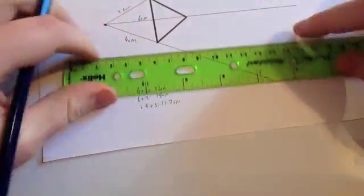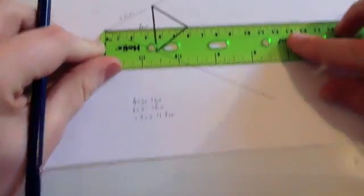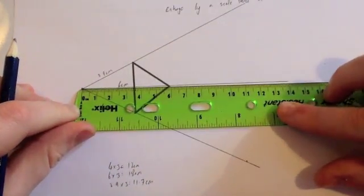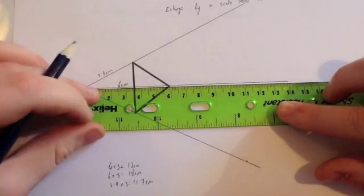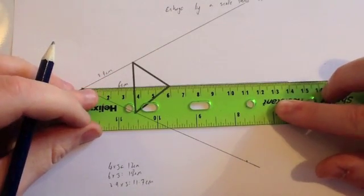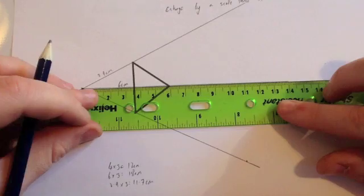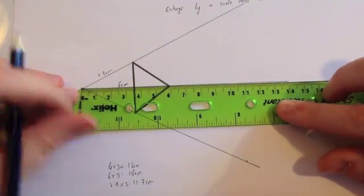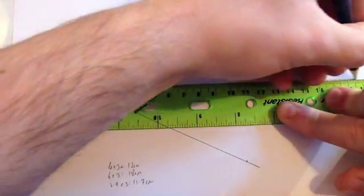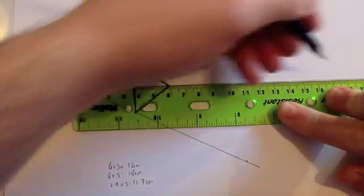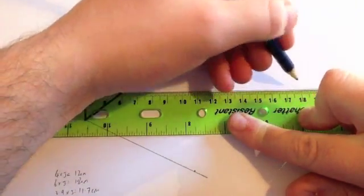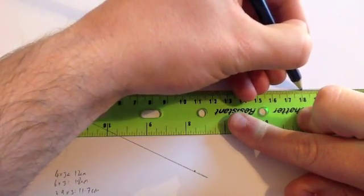This one was 6 centimeters, so it now needs to be 18. As you can see, I didn't draw my line far enough, so I'm going to have to extend my line. We wanted to go from zero to 18. 18 is here, so we put our dot there.